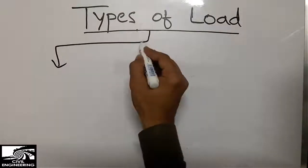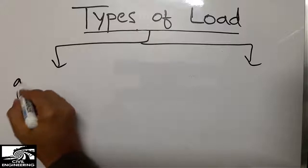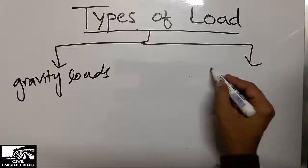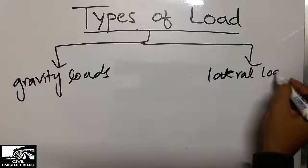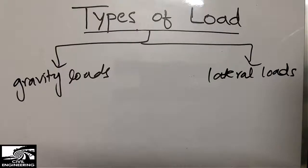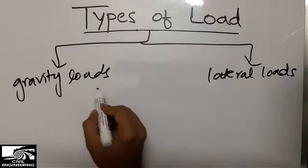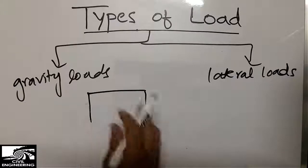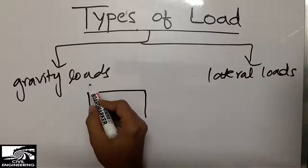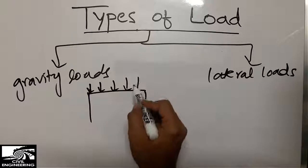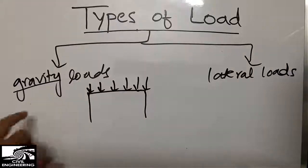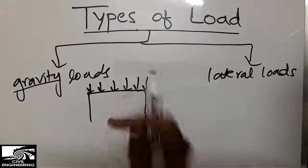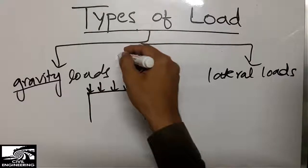There are mainly two types of loads acting on structures. One is the gravity loads and the other is the lateral loads. Gravity loads are those loads acting in the downward direction — the direction of gravity. Here I'm drawing a beam and a column in a frame structure. The loads acting downward, in the direction of gravity, are called gravity loads.